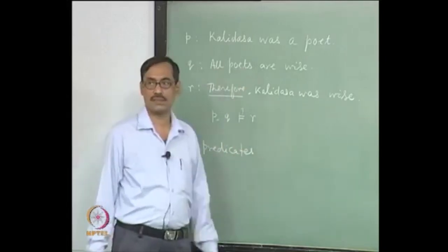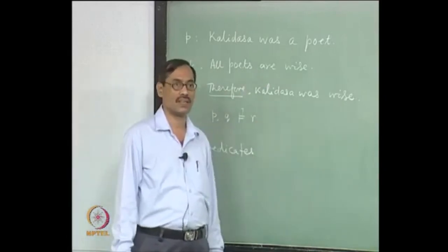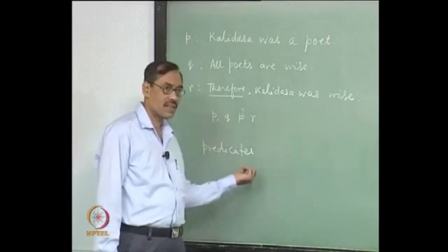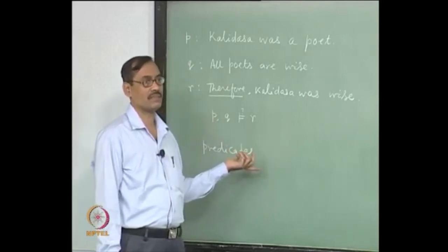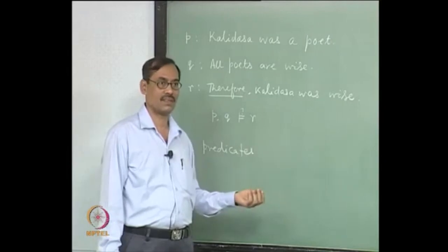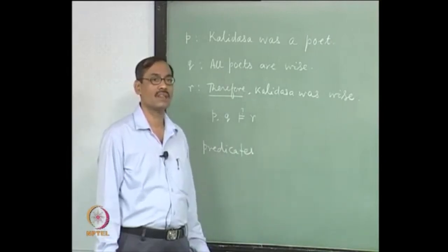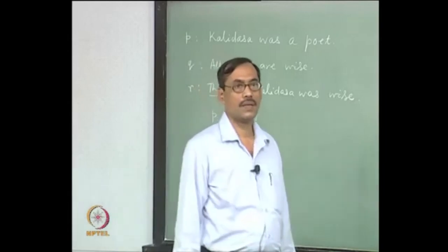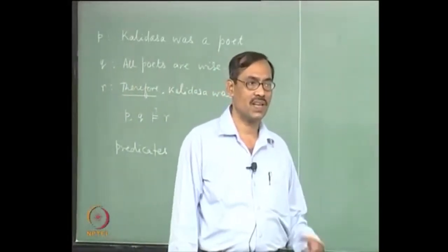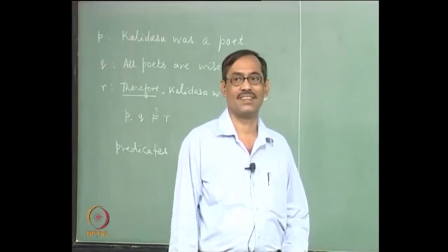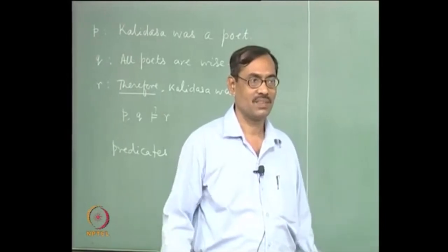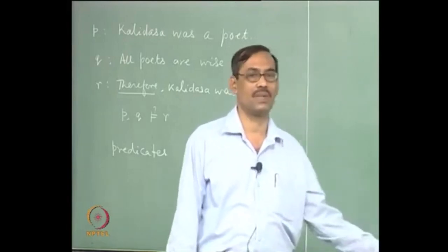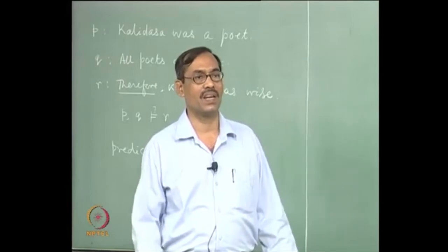'Is a poet' and 'is wise' are both unary predicates — they apply to one person only, one argument. But 'x likes y' makes 'likes' a binary predicate — it is not unary. 'Two lies between one and three' becomes a ternary predicate with three arguments. So predicates can have different numbers of arguments. In the first sentence, 'Kalidasa' is a name referring to some object — a proper name, which we call an individual constant. We need individual constants.